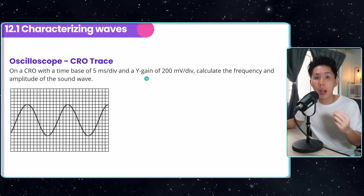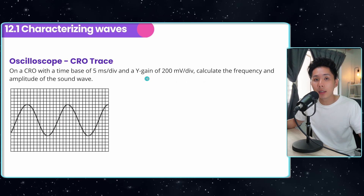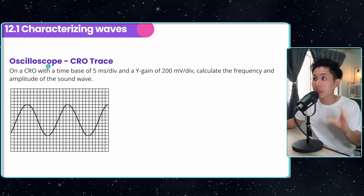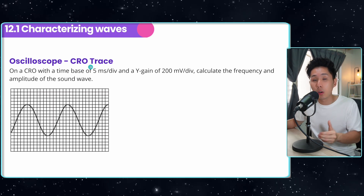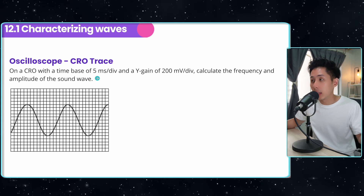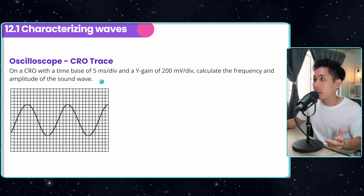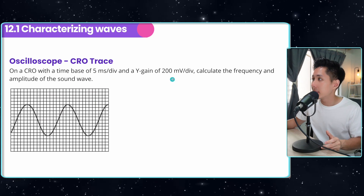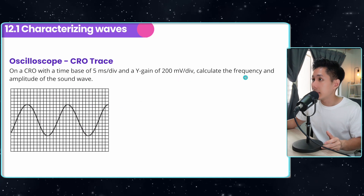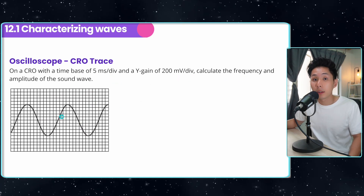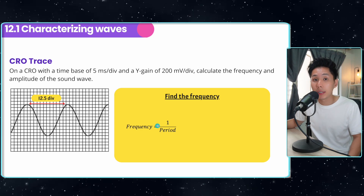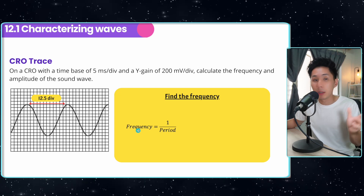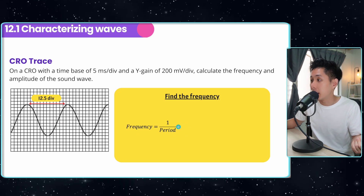We're going to look at a device that helps us visualize waves better. Since waves are intangible, how do we analyze them? An equipment people always use is the oscilloscope, which provides a CRO trace. Here is a worked example: on a CRO with a time base of 5 milliseconds per div — where one div means one box — and a Y gain of 200 millivolts per div, calculate the frequency and amplitude of the wave. Let's start by finding the frequency.